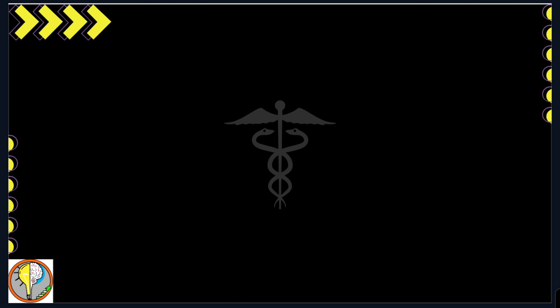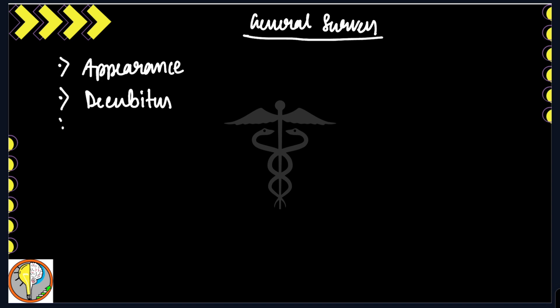First of all, the first point which is very important for your general survey is the appearance of your patient, then the position of the patient in the bed, that is decubitus. Then level of consciousness. Usually we write the patient is alert, conscious, and cooperative, and of decubitus of choice.